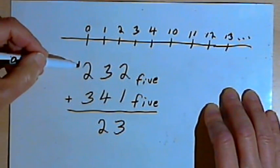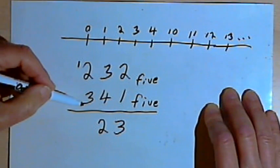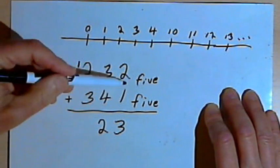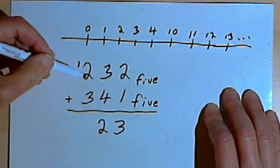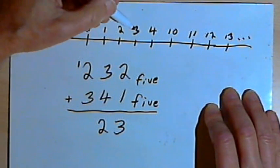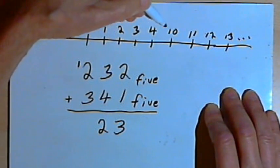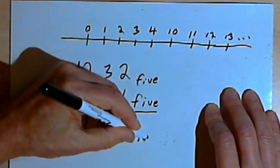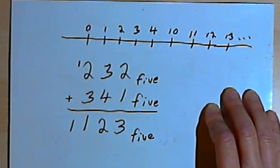Now I've got to add 1 plus 2 plus 3. Well, I know that 1 plus 2 is 3. I learned that in my first column. And I've got to add 3 plus 3. So I'll go to the number line, I'll go to the 3, and count up 3 spaces: 1, 2, 3. And that gets me to 11, 12, 13 base 5.